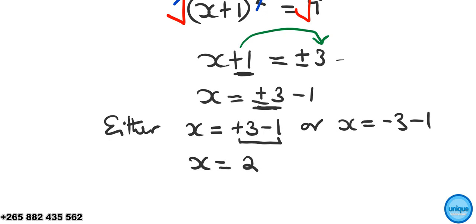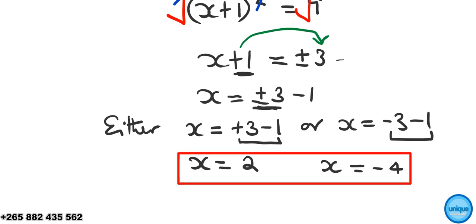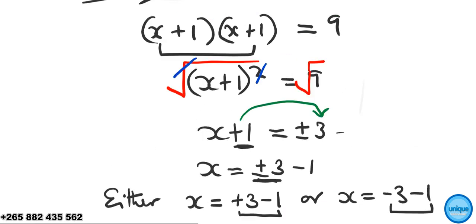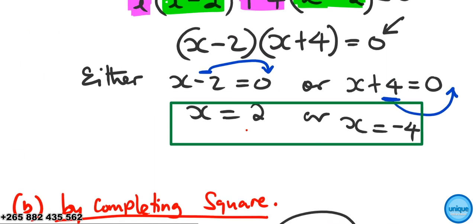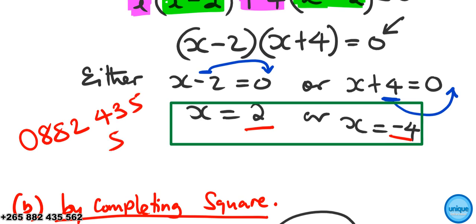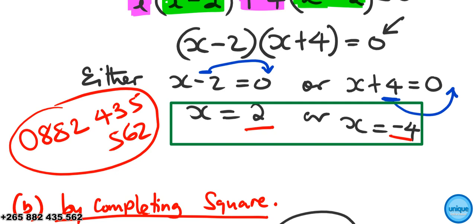So for the positive case, x equals positive 2. For the negative case, x equals negative 4. You can compare the answers: positive 2 and negative 4. If you're enjoying this video, please don't forget to subscribe to my channel, like my Facebook page, and send questions to WhatsApp number 0882-435-562.